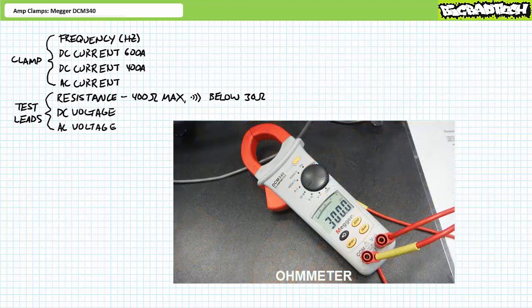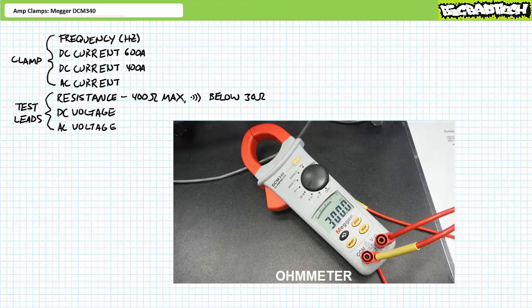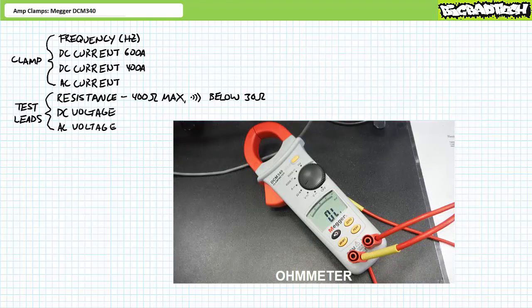In ohmmeter mode, the Mega DCM340 demonstrates I've adjusted this potentiometer to exactly 300 ohms. When I increase the resistance above 400 ohms, the DCM340 indicates over limit. Connection still exists, however, we're just over the limits of this device.